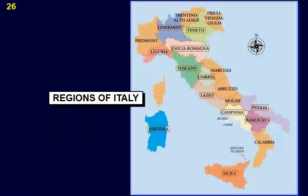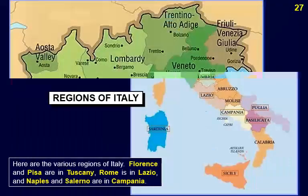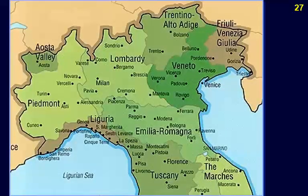Here are the various regions of Italy. Florence and Pisa are in Tuscany, Rome is in Lazio, and Naples and Salerno are in Campania. Lombardia and to a lesser extent Piedmont is the industrial heartland of Italy, with centers of industry such as Milan and Turin. The Italian automobile industry, with such makes as Renault and Fiat, is in this area.